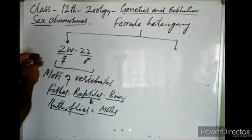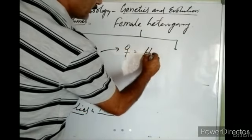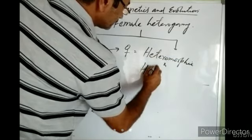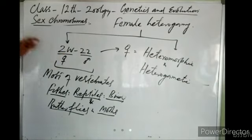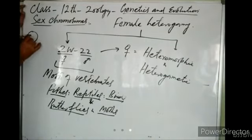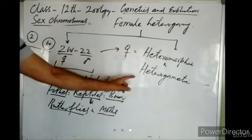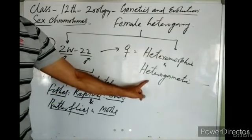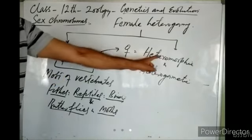In the ZW/ZZ condition, the females are heteromorphic and heterogametic. When meiosis occurs, the female produces one ovum with sex chromosome Z and another with sex chromosome W. So two types of gametes are formed. The Z and W chromosomes are different in morphology — that condition is heteromorphic.